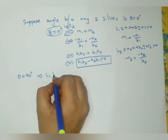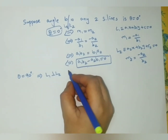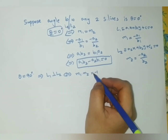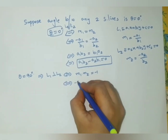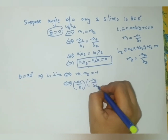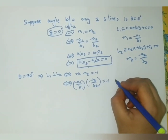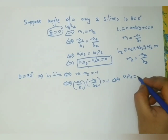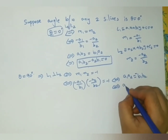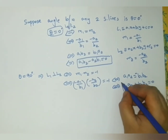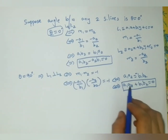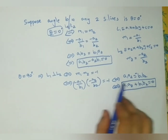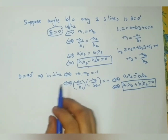If theta = 90 degrees, the two lines are perpendicular to each other. When two lines are perpendicular, the product of their slopes equals -1: m1 × m2 = (-a1/b1)(-a2/b2) = -1. This gives a1a2/(b1b2) = -1, so a1a2 + b1b2 = 0. This is the condition for two lines to be perpendicular to each other.